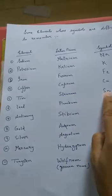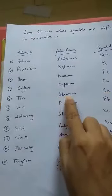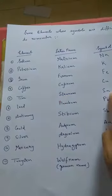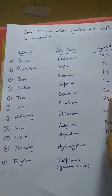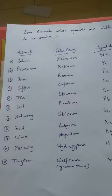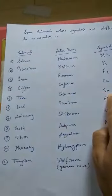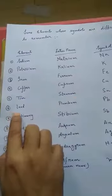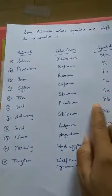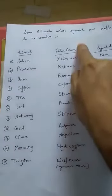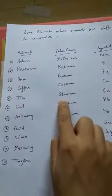S is the initial letter which is included. T and A are ignored, and the first N is included as symbol. There is no pattern to it. What you have to remember is that tin is called Sn because its Latin name is Stanum. Similarly, lead is Pb because it is called Plumbum in Latin language.